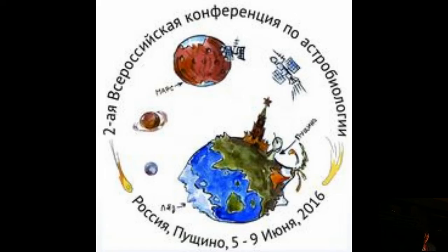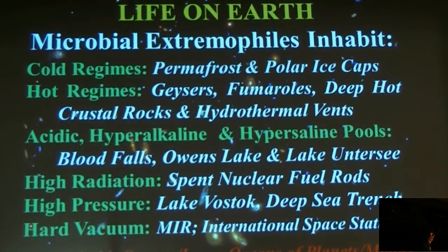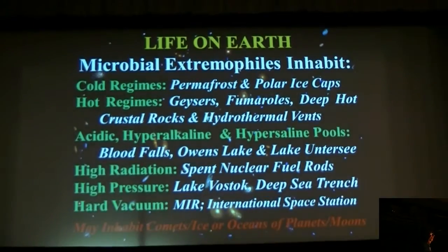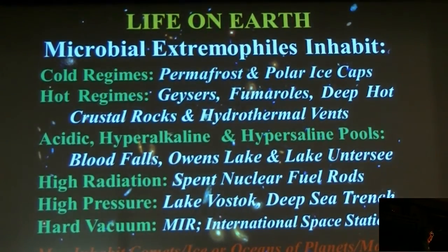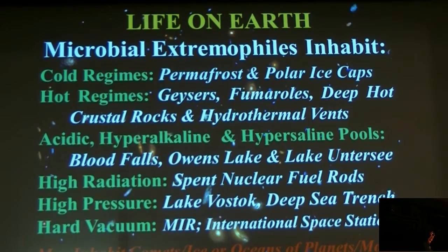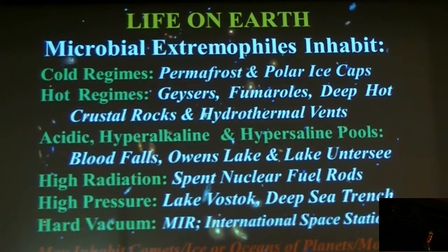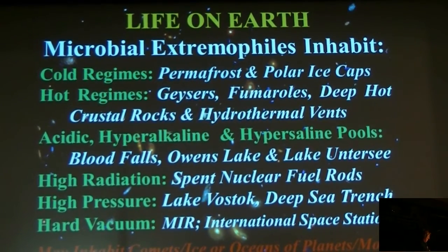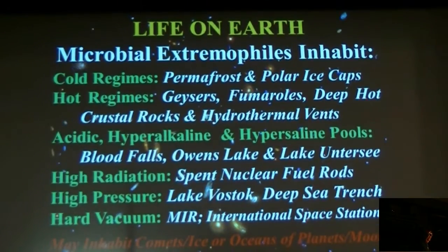Microorganisms love to live in permafrost and polar ice caps, in hot areas, in geysers, fumaroles, hydrothermal vents, hot crustal rocks, hypersaline, hyperacidic, and hyperalkaline pools, high radiation environments, high pressure environments, and in hard vacuum as you find on the outside of the International Space Station.